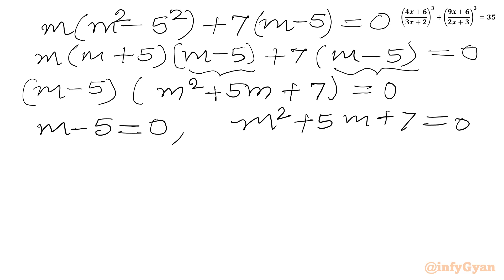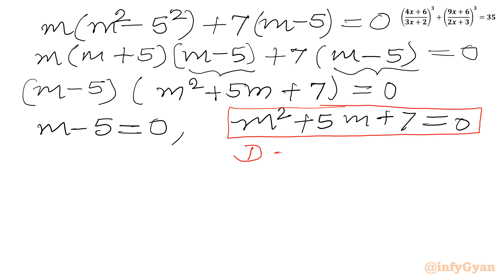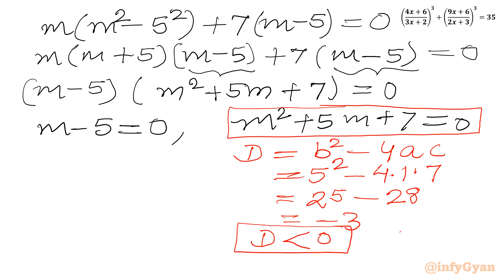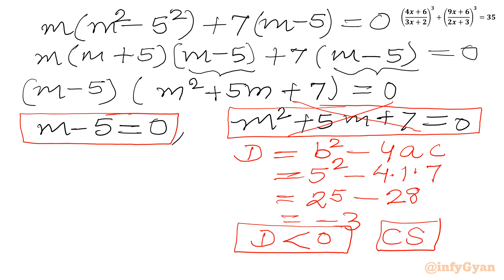We need to solve these two equations. Let us consider the quadratic first — I will check only the discriminant. By the formula, discriminant equals b square minus 4ac. Here a is 1, b is 5, c is 7. So discriminant equals 25 minus 28, which is negative 3. Since the discriminant is negative, we get complex solutions, so we reject this quadratic as we are looking for real solutions. For the linear equation m minus 5 equal to 0, we get m equal to 5.